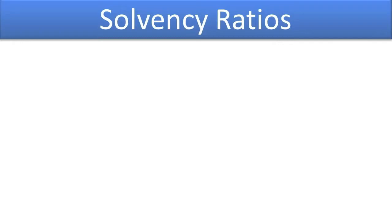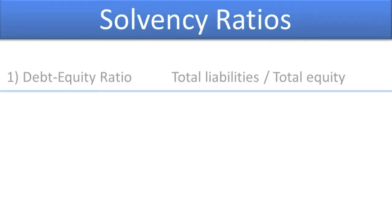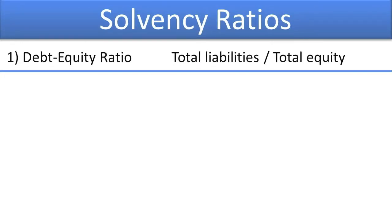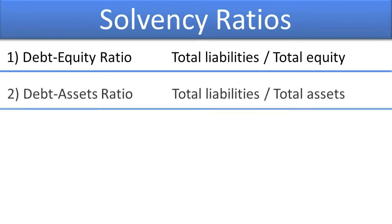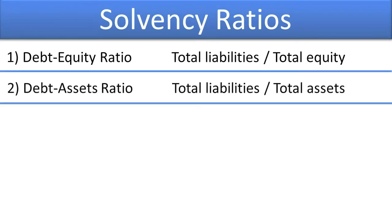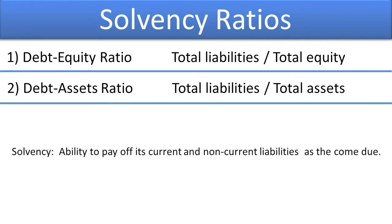The solvency ratios to be discussed in the next topic are: Debt to Equity Ratio and Debt to Assets Ratio. Solvency ratios focus on assessing the company's ability to pay off all their current and non-current liabilities as they come due.